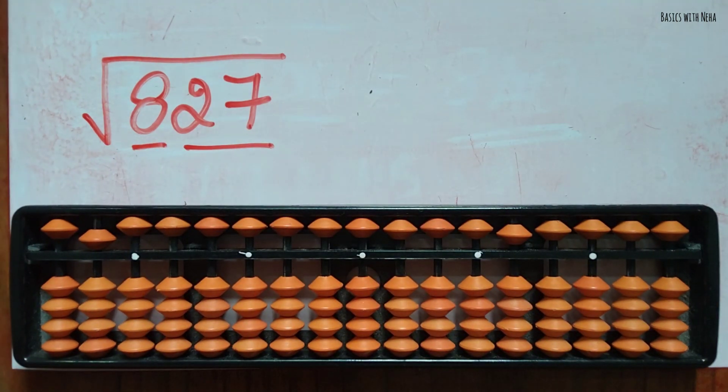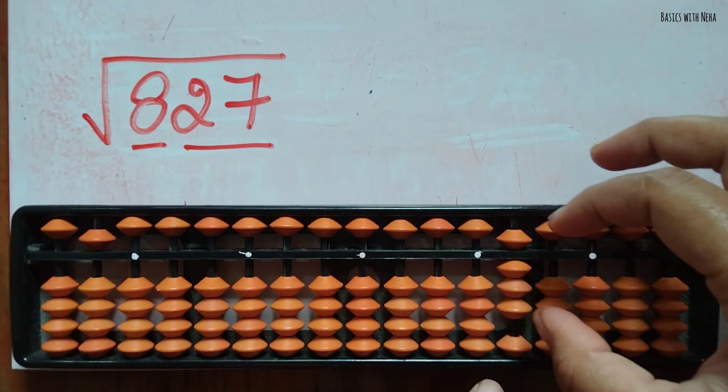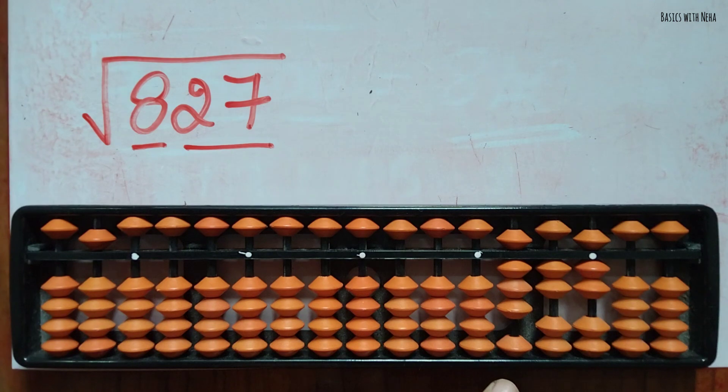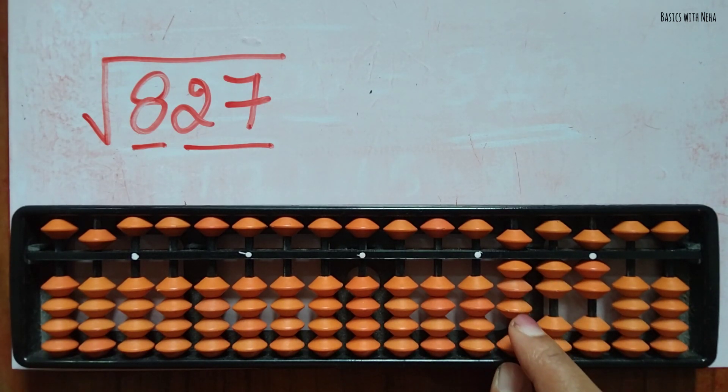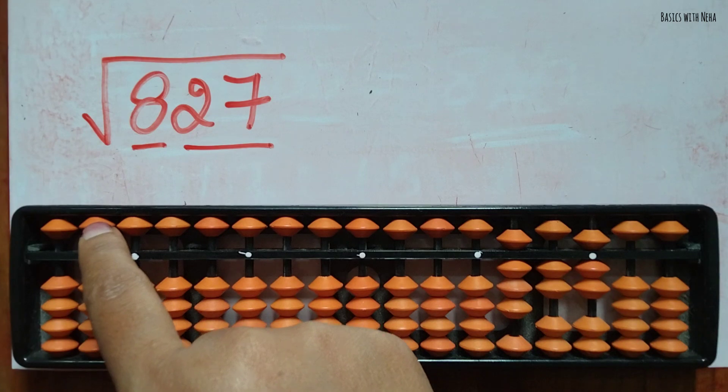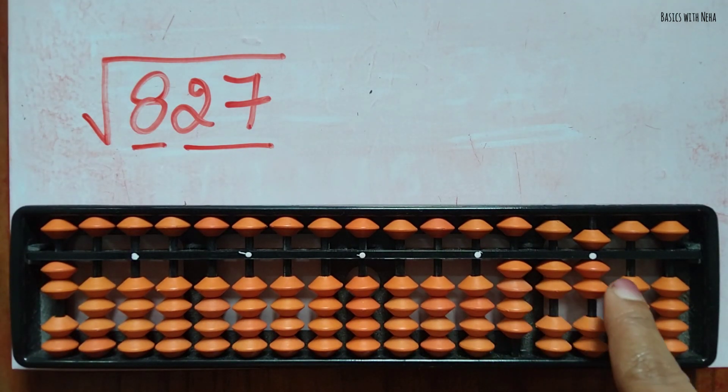Now I'm going to place the same number on the tool here, it is 827. Now I have to see to it that this is already grouped and we have to check the nearest number which is squared should be equal or less than this. So it will be 2, 2s are 4, because 3 3s are 9 you cannot take 3. So I'm going to take 2, 2s are 4, I'm going to minus 4.